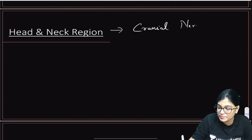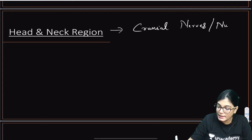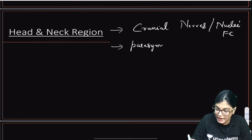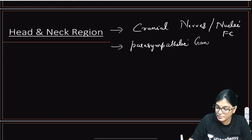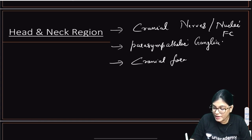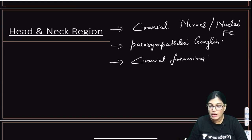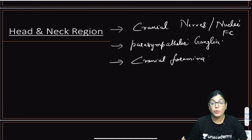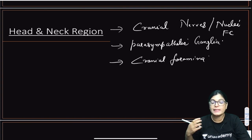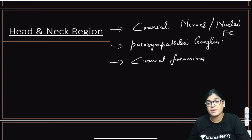For head and neck, cranial nerves are a very very important topic — specifically their functional components and nuclei. You cannot leave this topic. Parasympathetic ganglia of the head and neck region is again very important. Cranial foramina are very important — you must know their location and which structures traverse through them. Now the MCQs are not just direct — they ask you to identify the location or nerve in images, so you must correlate with good images.